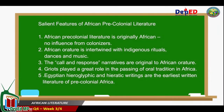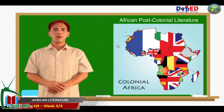In summary, here are some distinctive features of African pre-colonial literature. African pre-colonial literature is originally African — no influence from colonizers. African orature is intertwined with indigenous rituals, dances, and music. The call and response narratives are original to African orature. Griots played a great role in the passing of oral tradition in Africa. Egyptian hieroglyphic and hieratic writings are the earliest written literature of pre-colonial Africa.